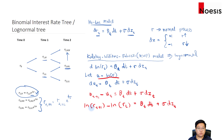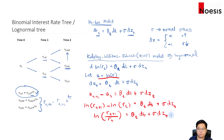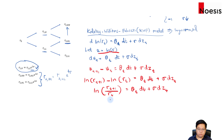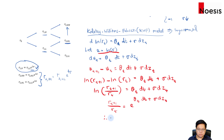Using the log relationship, ln(r sub t+1) minus ln(r sub t) becomes ln(r sub t+1 over r sub t). This means r sub t+1 over r sub t equals e to the power of theta sub t dt plus sigma dz sub t. Multiplying r sub t to the other side, we establish that r sub t+1 equals r sub t times e to the power of (theta sub t dt plus sigma dz sub t). This tells us the interest rate in the next period equals the current rate multiplied by that exponential term.